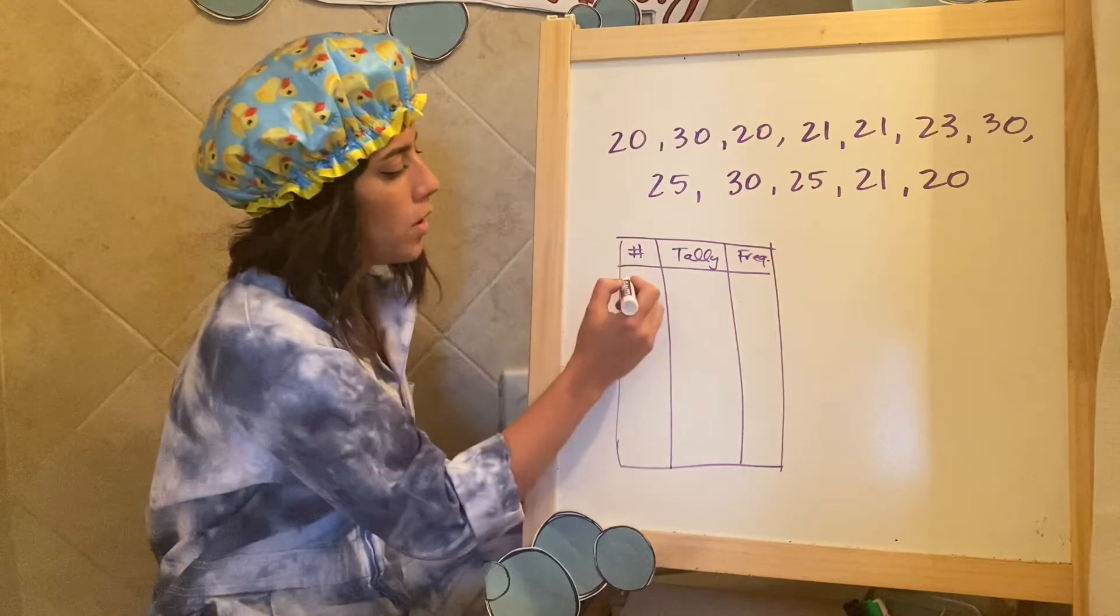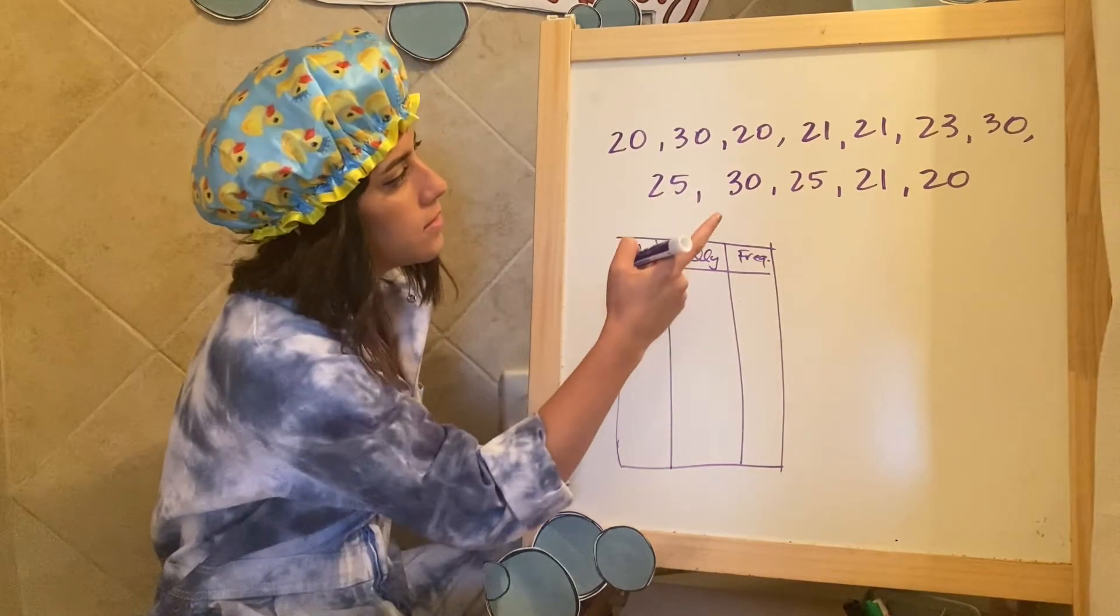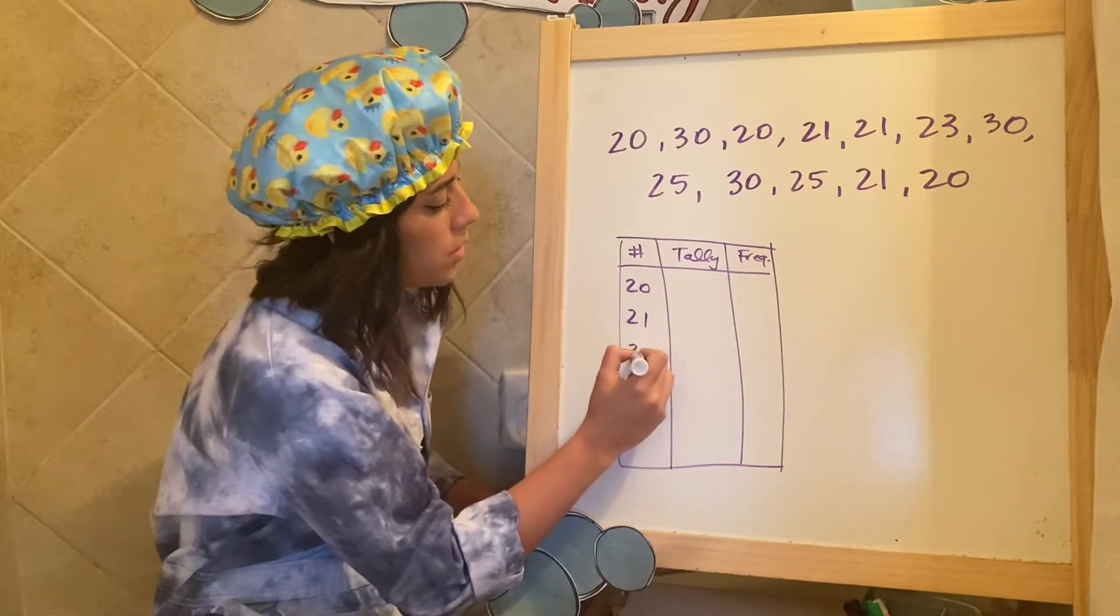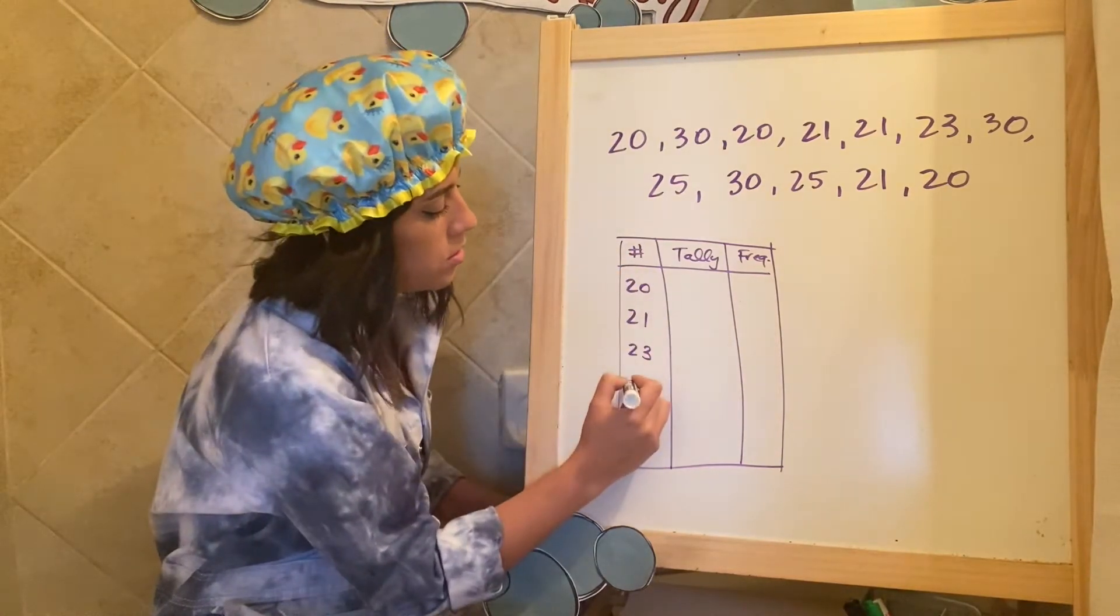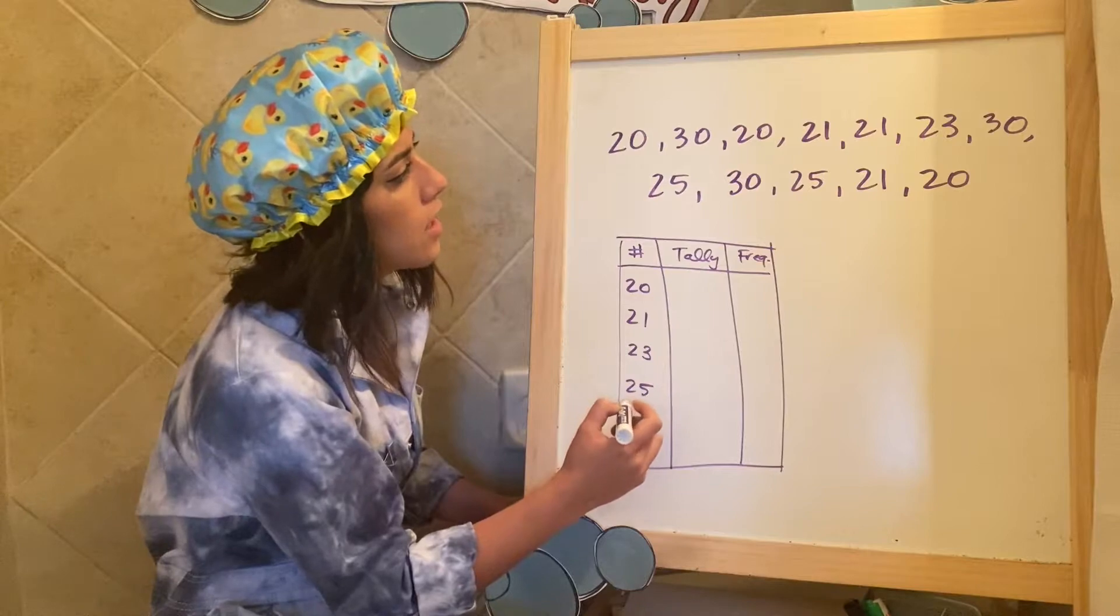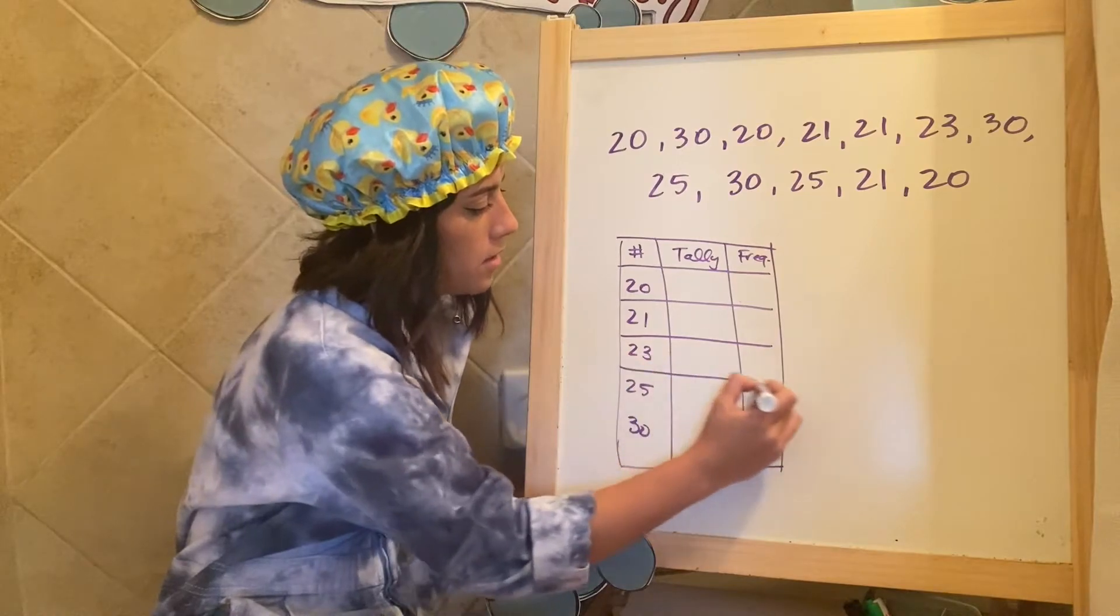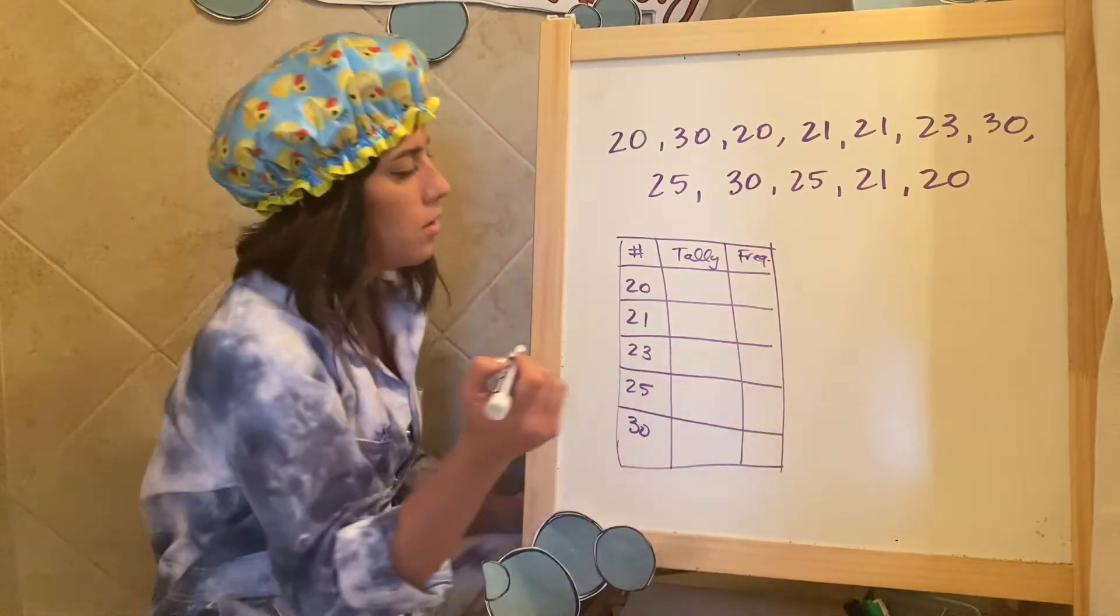So what do I see? Let me see. I see a 20. Okay. I see a 21. Going in order. I see 23, 25, and I see a 30. So that is my data. I'm looking to see how many there are of each.